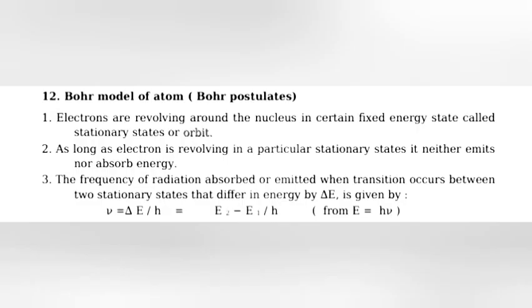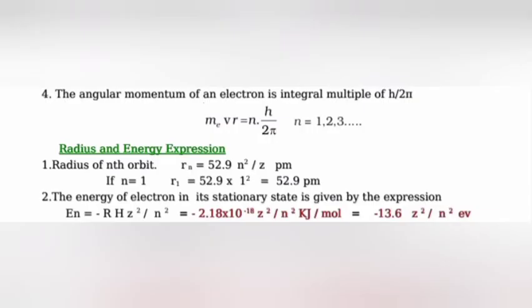Bohr model of atom, Bohr postulates: Electrons are revolving around the nucleus in certain fixed energy states called stationary state or orbit. As long as electron is revolving in a particular stationary state, it neither emits nor absorbs energy. The frequency of radiation absorbed or emitted when transition occurs between two stationary states that differ in energy is given by ΔE equals hν. The angular momentum of an electron is integral multiple of h by 2π.